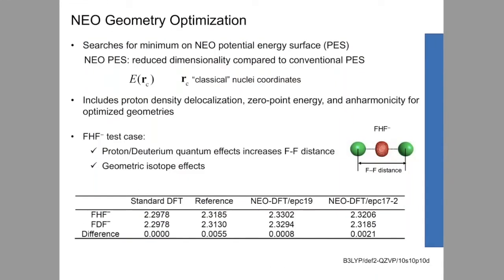After introducing NEO Hartree-Fock and NEO-DFT, we can move on to NEO geometry optimization. In NEO geometry optimization, we search for the minimum on the NEO potential energy surface. The NEO potential energy surface has reduced dimension compared to conventional PES — it only depends on the classical nuclear coordinates, not the coordinates of the quantum protons. If we perform a NEO geometry optimization, the resulting optimized geometries inherently include proton density delocalization, zero-point energy, and anharmonicity, because we're treating the protons quantum mechanically.